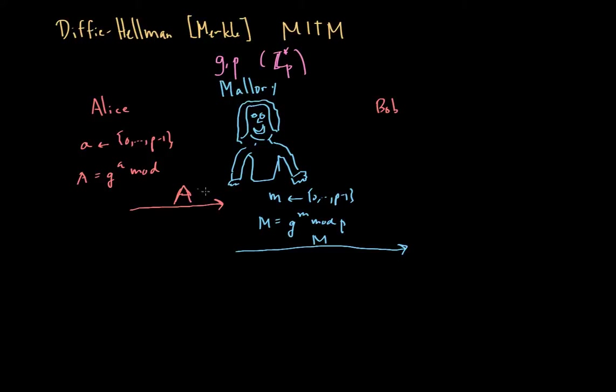Now Bob, he can't tell if it's A or M, they both look like a random number to him. He doesn't know what the difference is. He's going to see this M, he's going to think, oh, this must be coming from Alice. And so Bob is going to do the protocol as he normally would, and he's going to compute his value, lowercase b, which goes from 0 to P minus 1. And by the way, this might be a good place for you to just pause the video, see if you can figure out what the rest of the attack is on your own. If not, watch the rest of the video. And then Bob is going to compute from this lowercase b, he's going to compute uppercase B equal to G to the lowercase b mod P. And he's going to send B over.